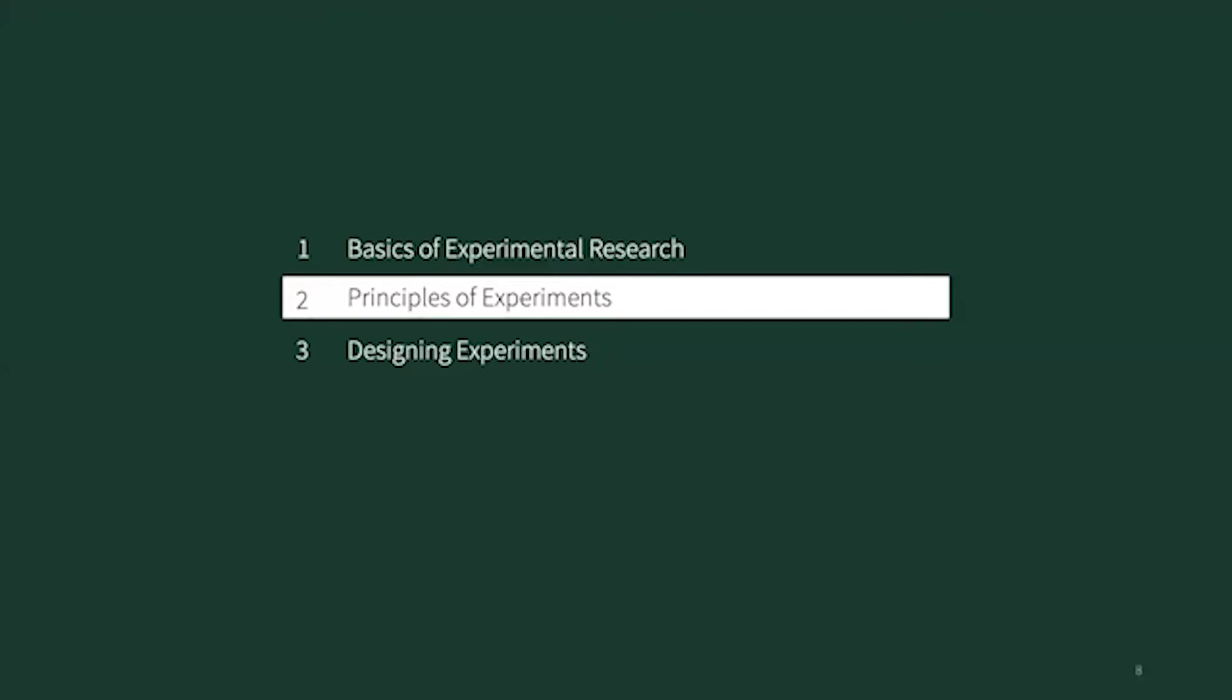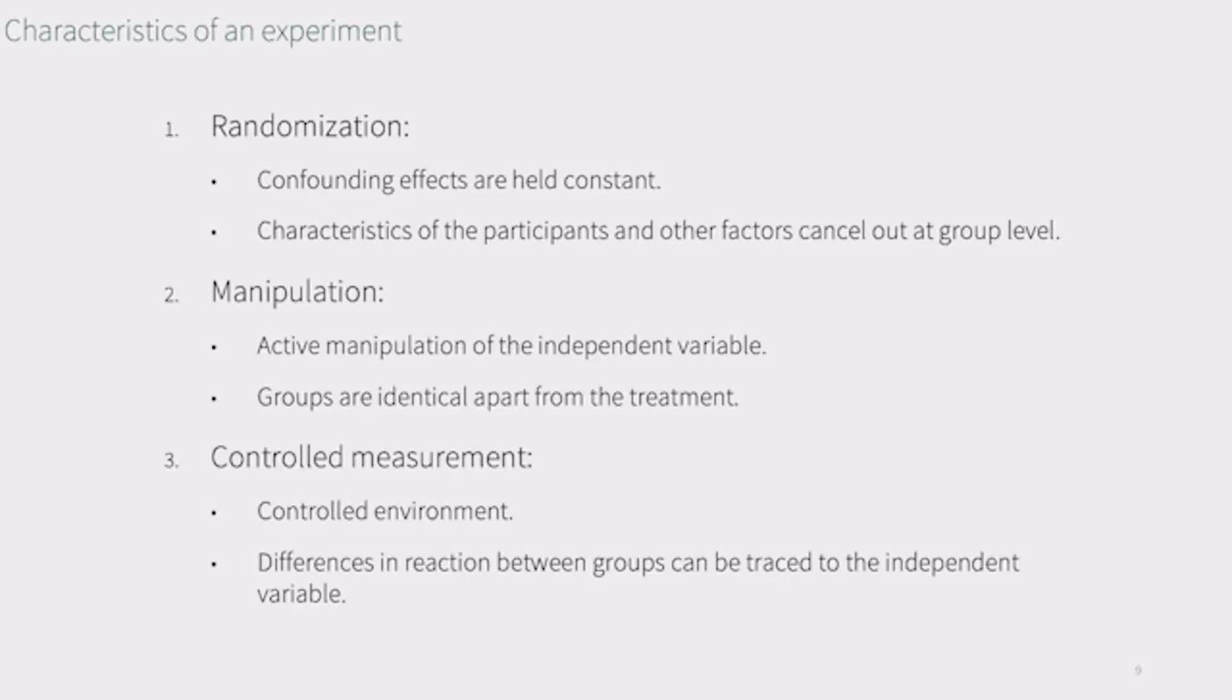Next, we're going to look at some principles of experiments. We may define an experiment as an empirical investigation in a controlled environment in which we manipulate an independent variable before measuring its effect on a dependent variable. In the simplest form, we will use two groups, one of which will be exposed to the stimulus while the other, or a control group, is not.